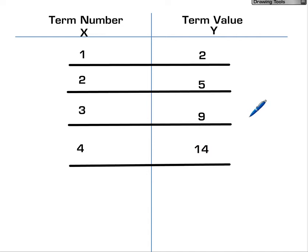is try and understand patterns that we're seeing in the values. Because if we can find a pattern, then we can find a missing value. For example, if we wanted to try and find the term value when X was 5, how would you find it?